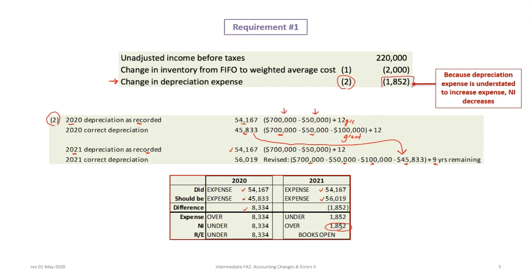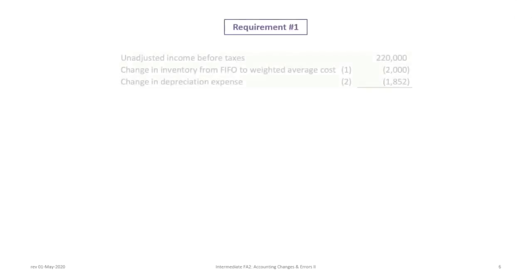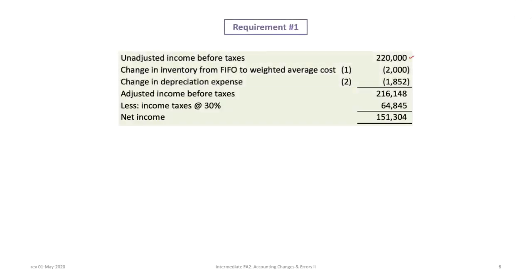The $1,852 is the only item that gets changed on the income statement; the 2020 difference of $8,334 would be adjusted to retained earnings. So starting from unadjusted income before taxes, we deduct $2,000 for the inventory change from FIFO to weighted average, and deduct $1,852 for the change in depreciation expense, giving adjusted income before taxes of $216,148. Deducting income taxes at 30% ($64,845) gives net income of $151,304, which will appear in the statement of retained earnings.